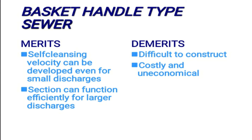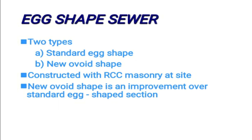The egg-shaped sewer section comes next. There are mainly two types of egg-shaped sewers: the standard egg-shaped sewer and the new ovoid-shaped sewer. The new ovoid shape is an improvement over the standard egg-shaped section.